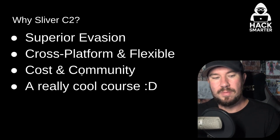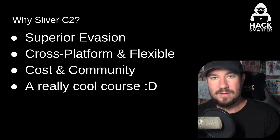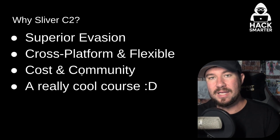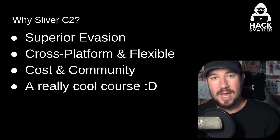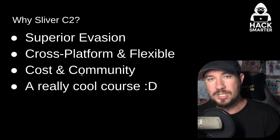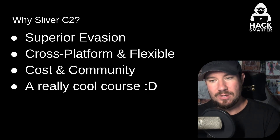Number three: cost and community. Sliver C2 is completely free. It is fully open source, and it has an amazing community continually adding features and value to it. If you want to be part of the open source community, you can. As you work with Sliver, you might notice a module you think should be there — you can do it yourself. You can open a pull request, add it to Sliver, and become a contributor to the Sliver C2 framework.